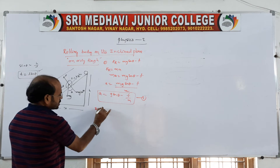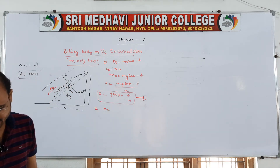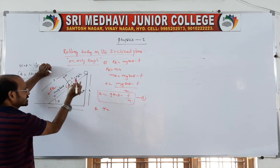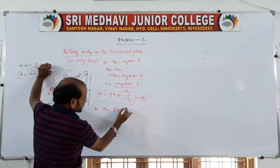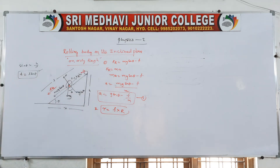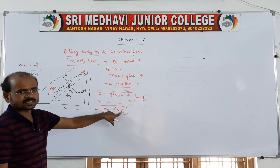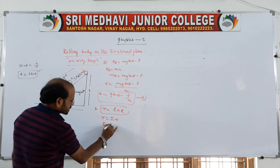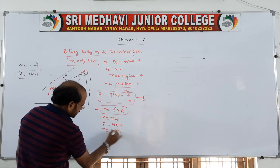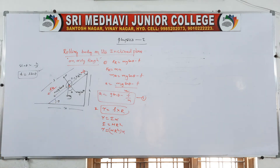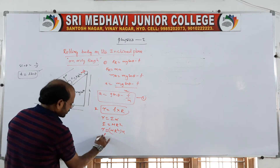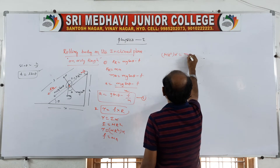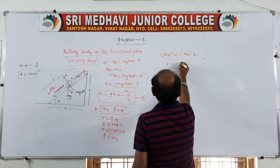Torque equals force into perpendicular distance. The frictional force acts at radius r, so torque equals f into r. We also know torque equals I alpha, where I equals mk squared. So mk squared alpha equals f r. Using the rolling condition, alpha equals a/r, and simplifying: f/m equals k squared by r squared into a.